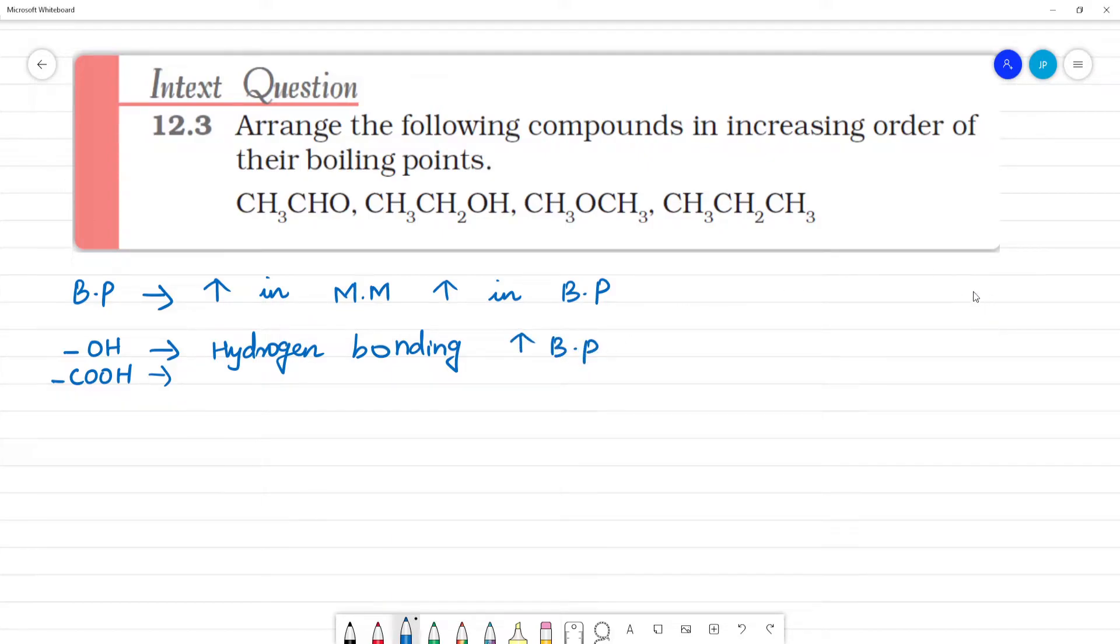Clear? So first, more boiling point is COOH, acid is there, that is alcohol. Clear? Next, aldehyde and ketone compare. Aldehyde will be having more boiling point due to polarity. Polarity for aldehyde, that is CHO group, more boiling point than C double bond O group.